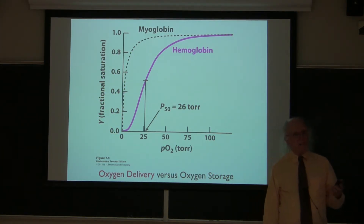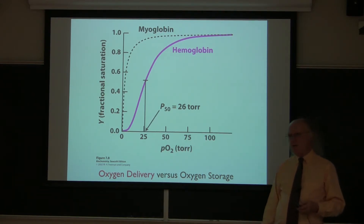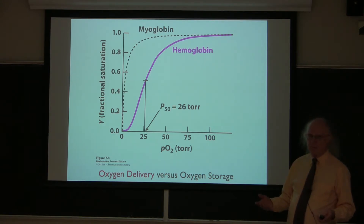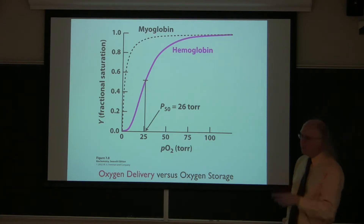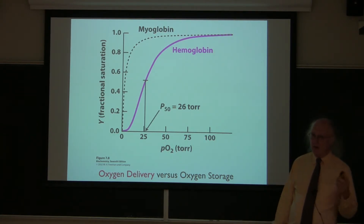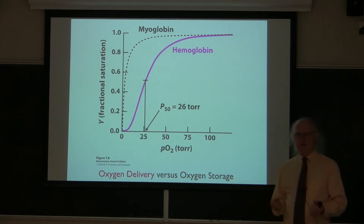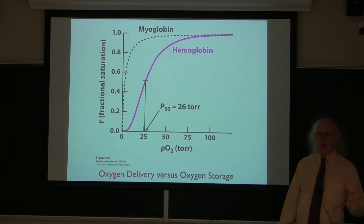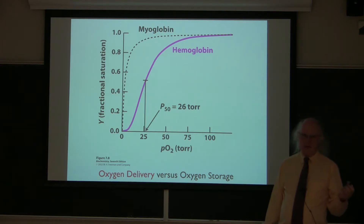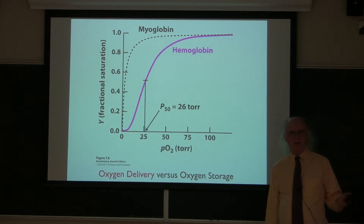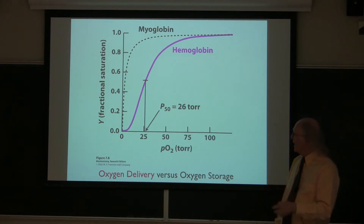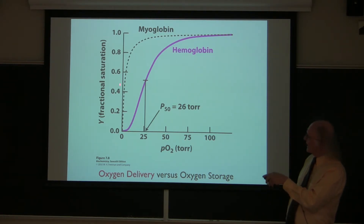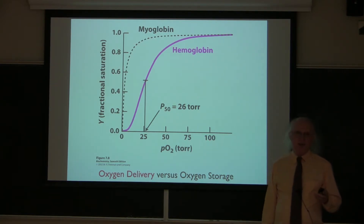Before I talk about that further, I want to say something about the oxygen-binding properties of hemoglobin. Hemoglobin turns out to be great for the delivery of oxygen. I compare its oxygen-binding properties here with that of another oxygen-binding protein known as myoglobin. Myoglobin is found in our muscles and is really, really good at binding oxygen and holding on to it, but it's not so good at letting it go. On the y-axis of this plot we see what fraction of all the subunits are saturated with oxygen — zero meaning none, and one indicating 100% saturation.